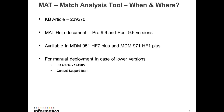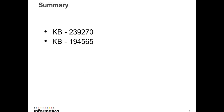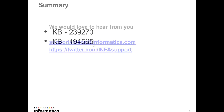There is also a MAT help document available for pre-9.6 and post-9.6 versions, attached to KB article 239270. This KB article helps you understand how to launch the match analysis tool and what help documents are available. These are the main KB articles for the match analysis tool — refer to them and contact the support team if you have further queries.